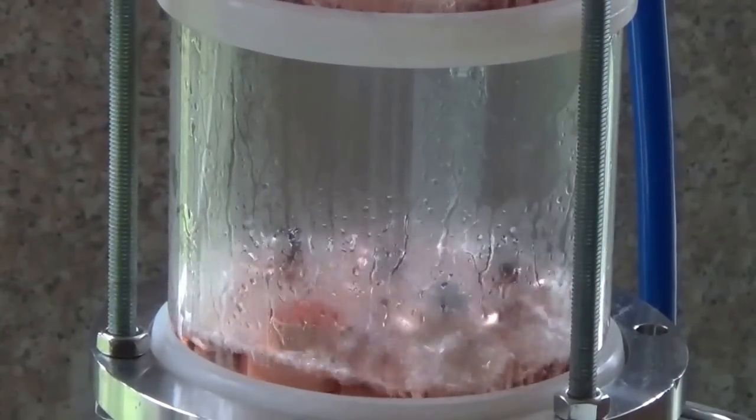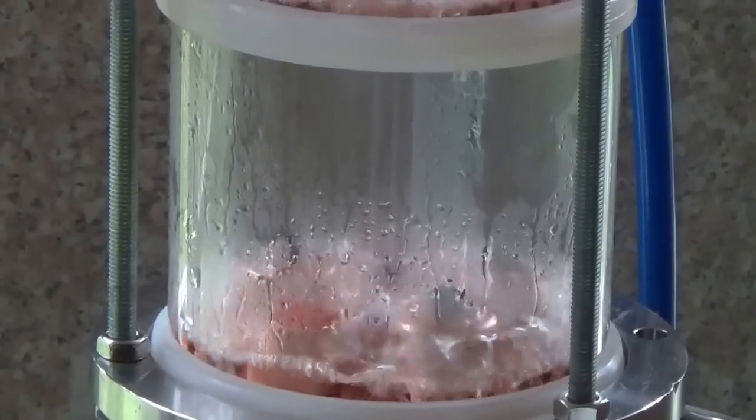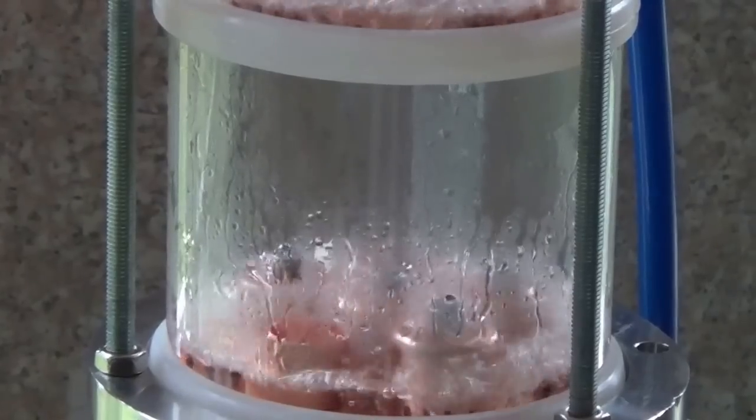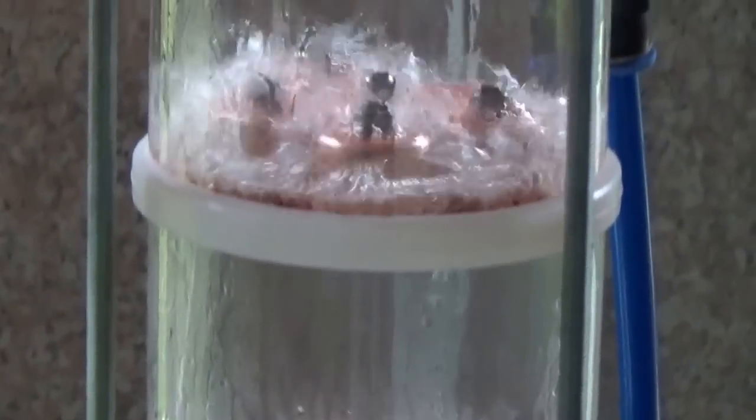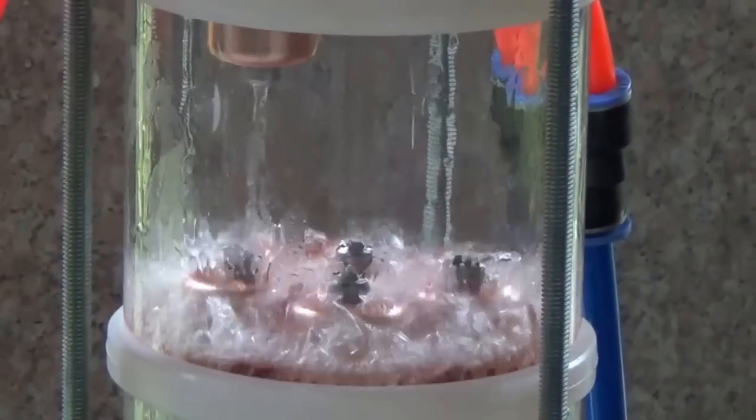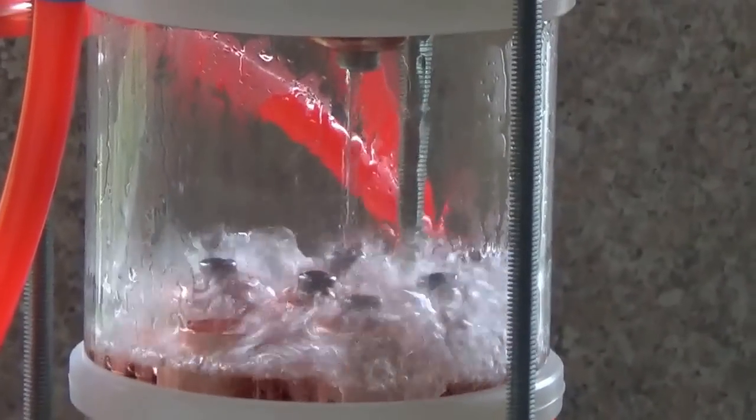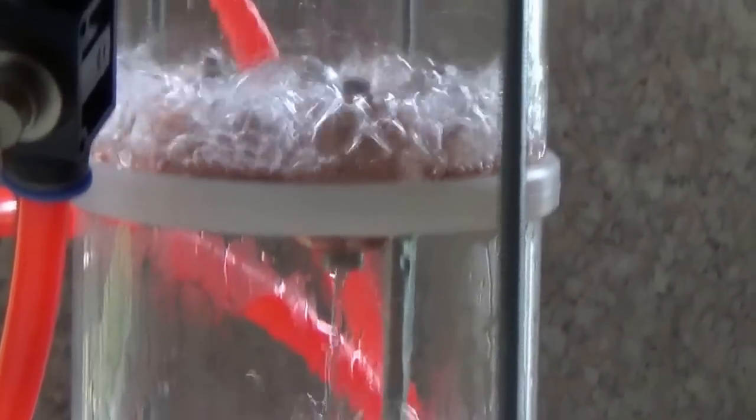You can see the bottom glass is foggier because it has more water on the bottom plate and it gets richer in alcohol as it moves up and cleans the glass.